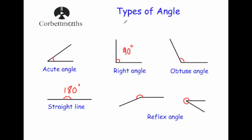In this video we're going to look at the different types of angle. First of all we've got an acute angle. An acute angle is an angle that's bigger than 0 degrees but less than 90 degrees.